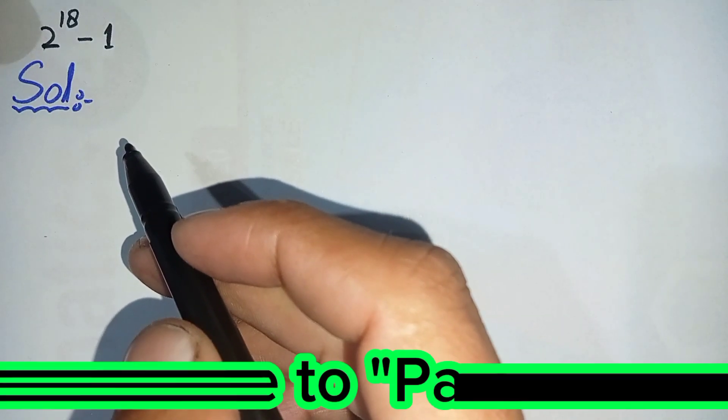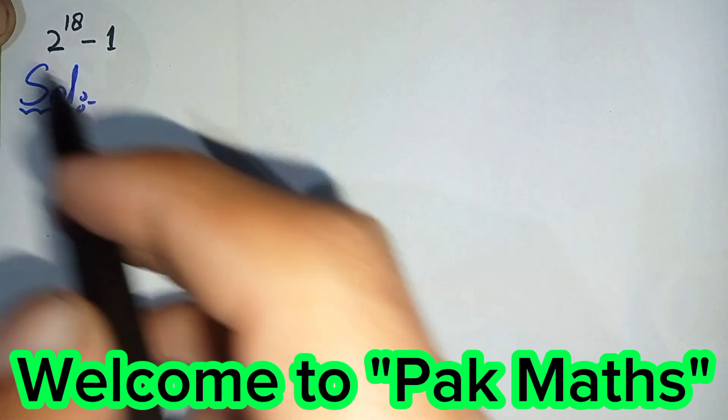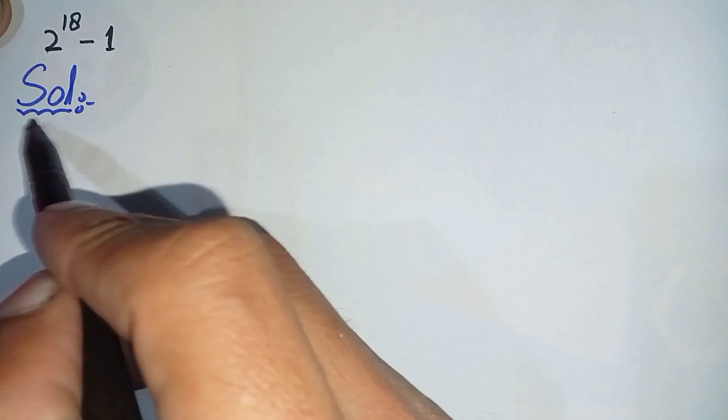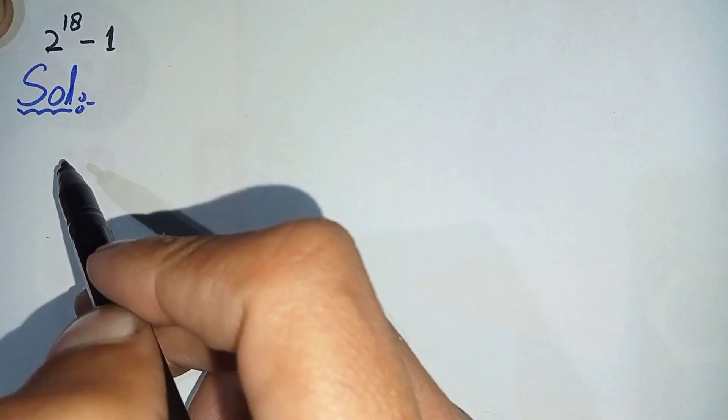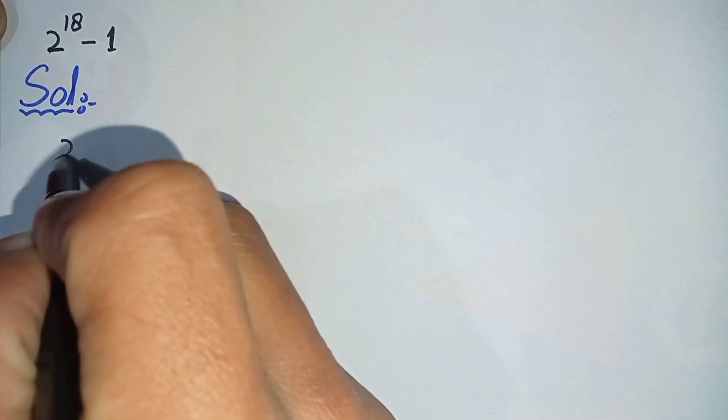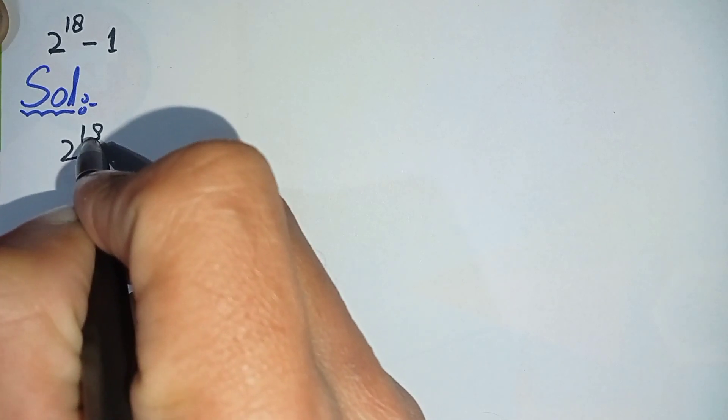Hello everyone, welcome to Far Comments. In this video I'm going to solve this nice math problem. Now to solve this math problem, first we will write the solution and then we will rewrite this question in the solution again and we will try to solve it. So the question is 2 raised to power 18 minus 1.